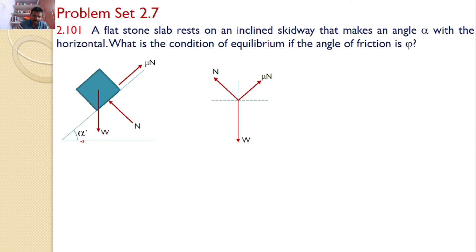Now, mu N is parallel to the surface. Hence, this angle made by mu N with the horizontal becomes alpha. And N is perpendicular to the surface. Hence, N makes an angle alpha with the vertical.